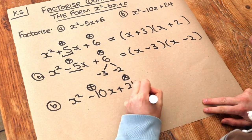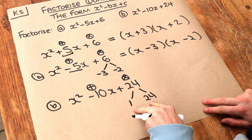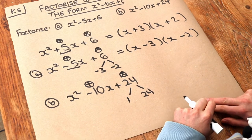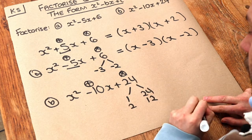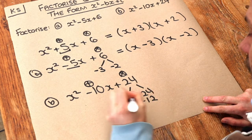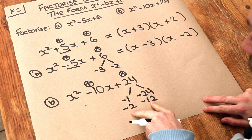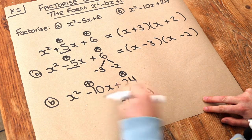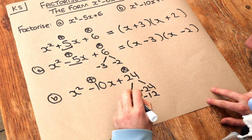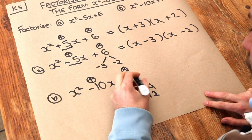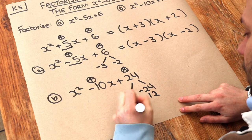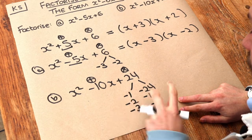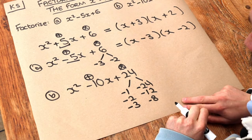So let's consider the factor pairs of 24. Well, 1 times 24 is 24, but they don't combine in any way to get minus 10. What about 2 and 12? Well, if they were both negative, they do multiply to give 24, but they add to give minus 14, which is not minus 10. What about 3 and 8? They multiply to give 24, but don't add to give minus 10 — they add to give minus 11.